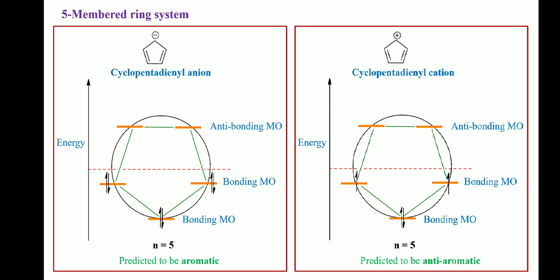The Frost diagram of a five-membered ring system is a circle inscribed with a pentagon, one vertex pointing downward. Three orbitals below the horizontal diameter are bonding MOs, while the two above are anti-bonding. In the cyclopentadienyl anion, six pi electrons all occupy bonding MOs; with no unpaired electrons the molecule is diatropic — aromatic. In the cyclopentadienyl cation, four pi electrons occupy bonding MOs but leave unpaired electrons, so the molecule is paratropic — anti-aromatic.